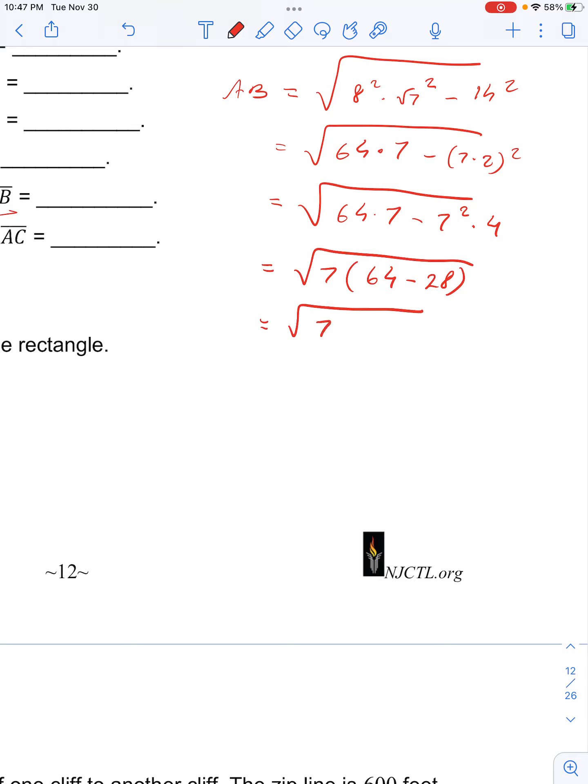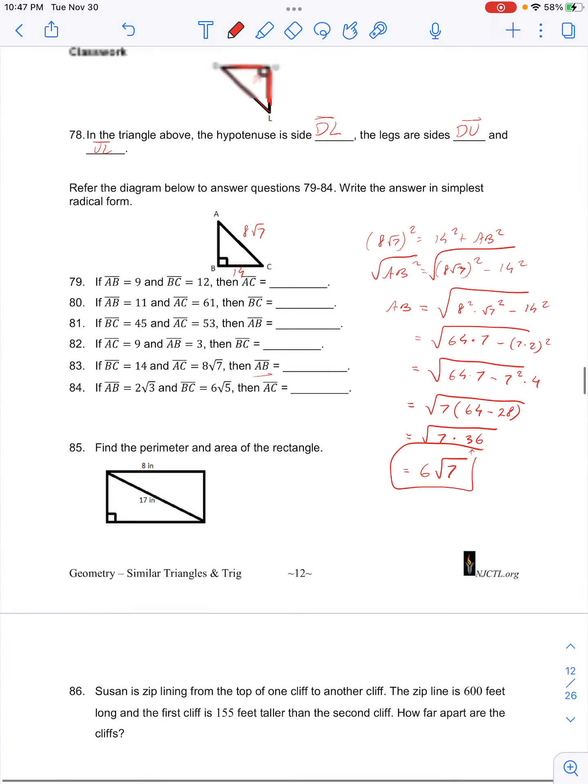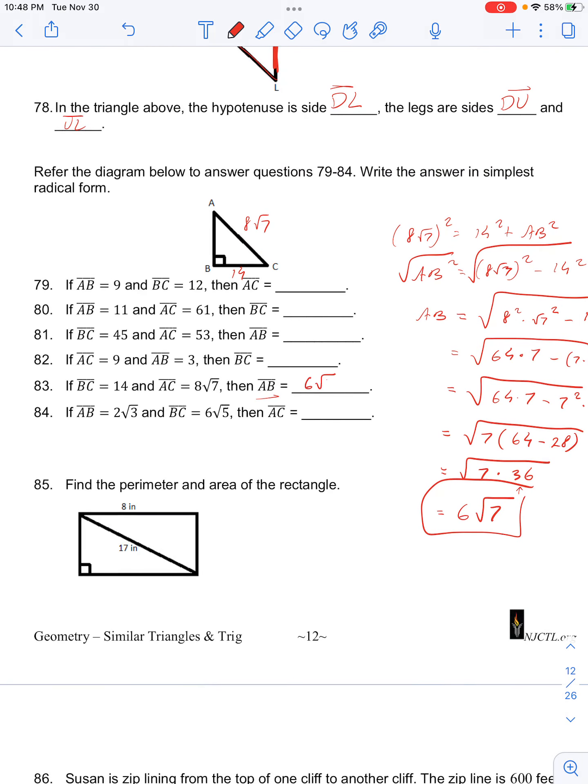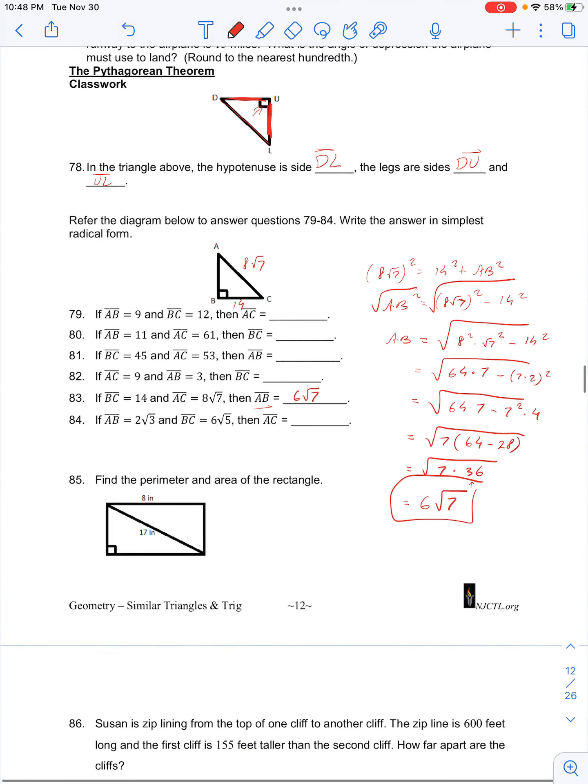So we have square root of 7 times 36 and 36 can be broken as a perfect square, so that's 6 squared. So we can pull that out under the radical, so that's 6 times rad 7 and that means that AB is equal to 6 rad 7.